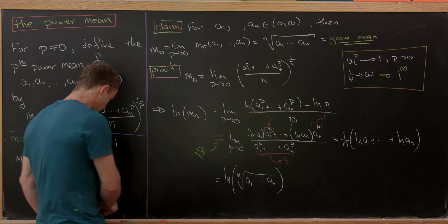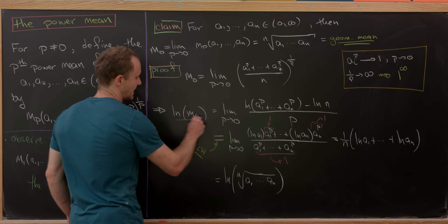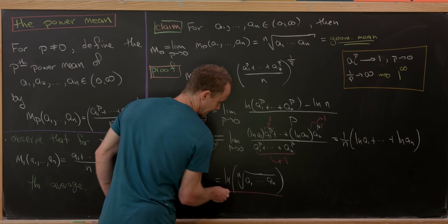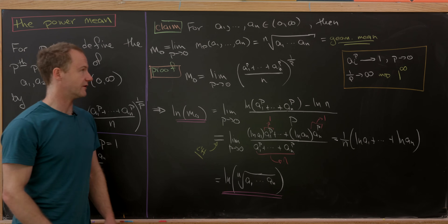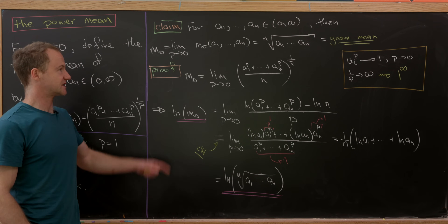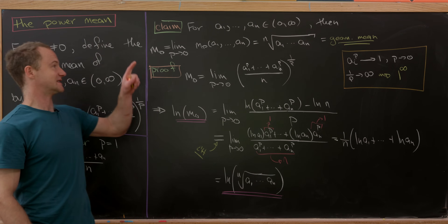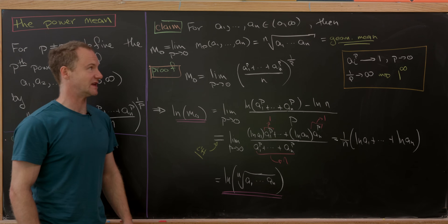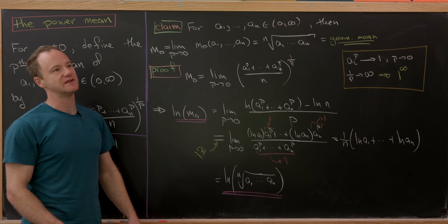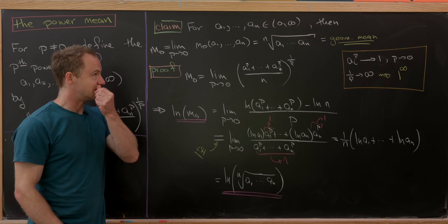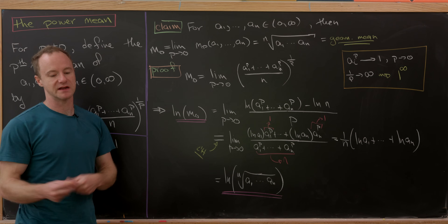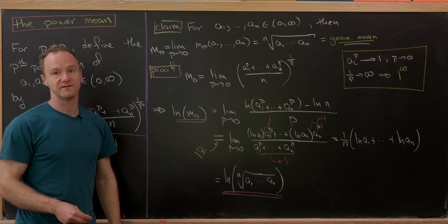Applying logarithm rules, (1/n)(ln a₁ + ... + ln aₙ) = ln((a₁·...·aₙ)^(1/n)) — that is, the log of the n-th root of the product. So ln(m₀) equals the natural log of the geometric mean. Exponentiating both sides gives us exactly the result: the zeroth power mean equals the geometric mean.